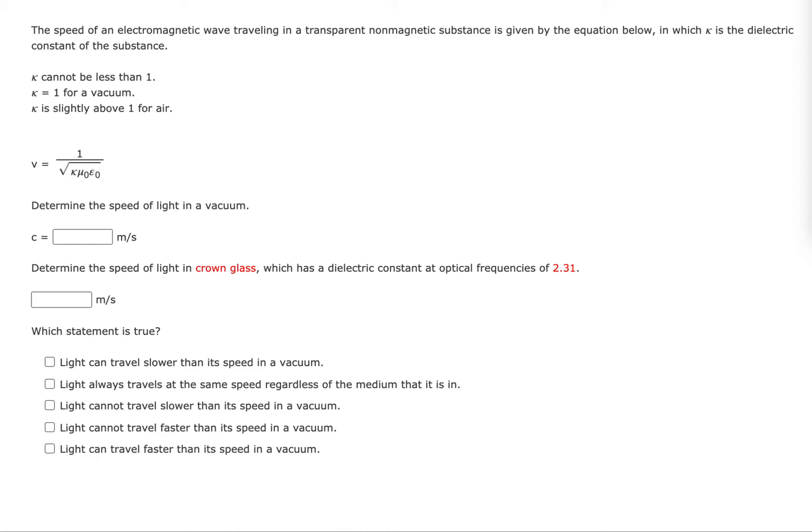Alright, it says the speed of an electromagnetic wave traveling in a transparent non-magnetic substance is given by the equation below, where kappa is the dielectric constant of the substance.